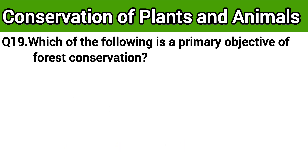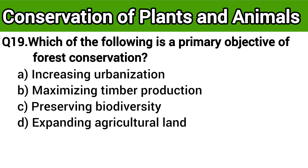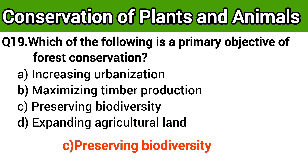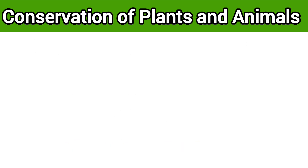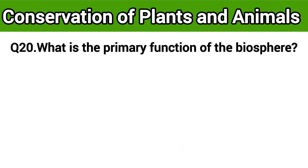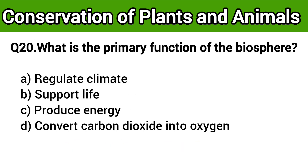Question number 19: Which of the following is the primary objective of forest conservation? The right answer is option C: preserving biodiversity. Question number 20: What is the primary function of the biosphere? The right answer is option B: support life.